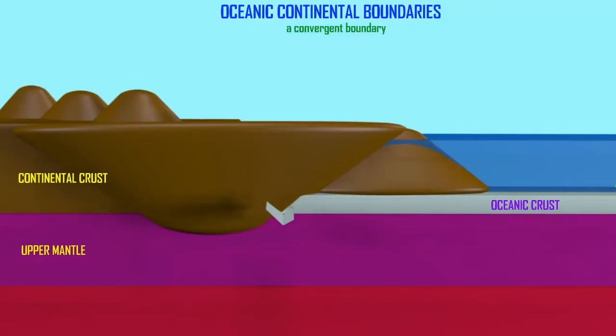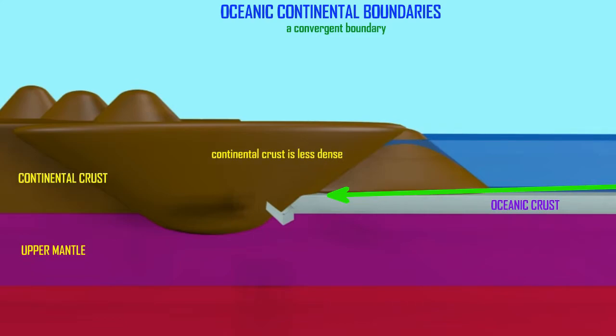Not all boundaries between tectonic plates are divergent where they spread apart from each other, otherwise the Earth would be expanding. Obviously then some are convergent where they collide. What happens?